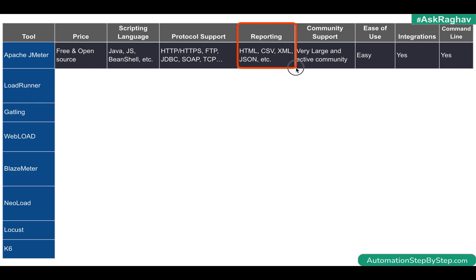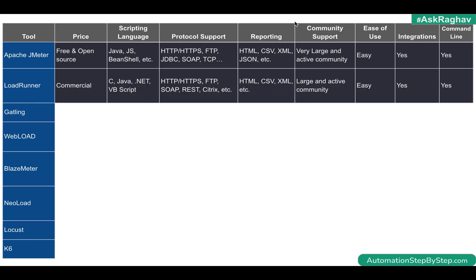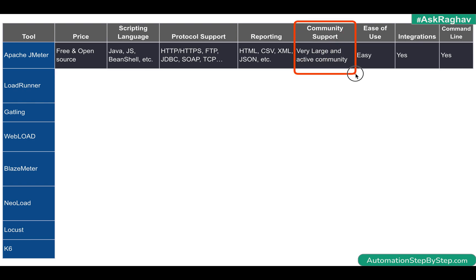For reporting in JMeter, we have listeners that provide options for common reporting formats like CSV, XML, HTML, and JSON, and there are also options to create graphs. JMeter has a very large and active community. It is easy to use with a good UI, and you can run tests from the UI or from the command line, which also enables integration with third-party tools and platforms.